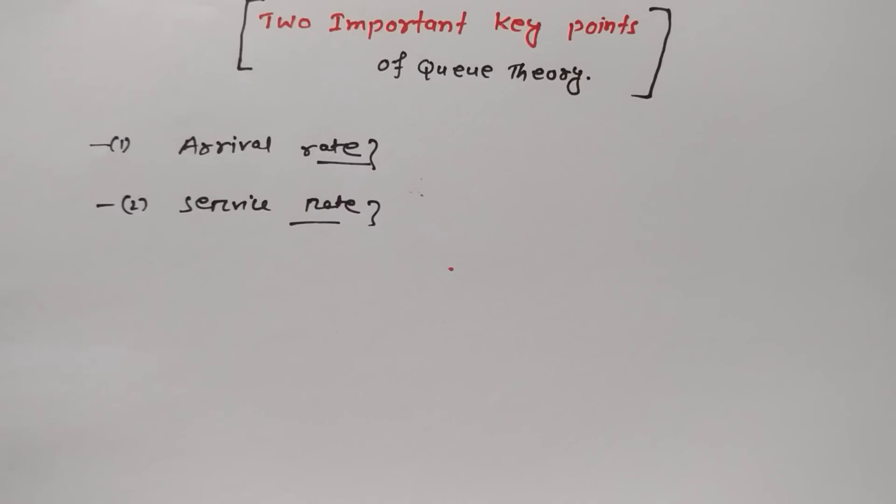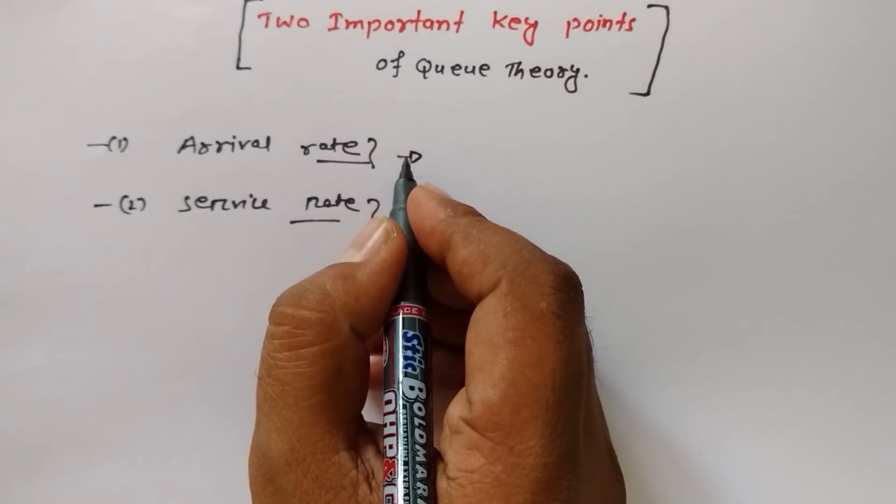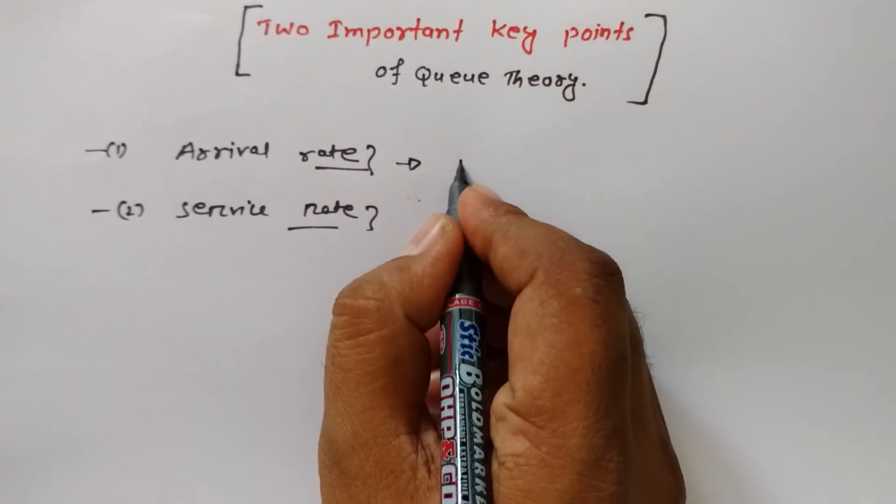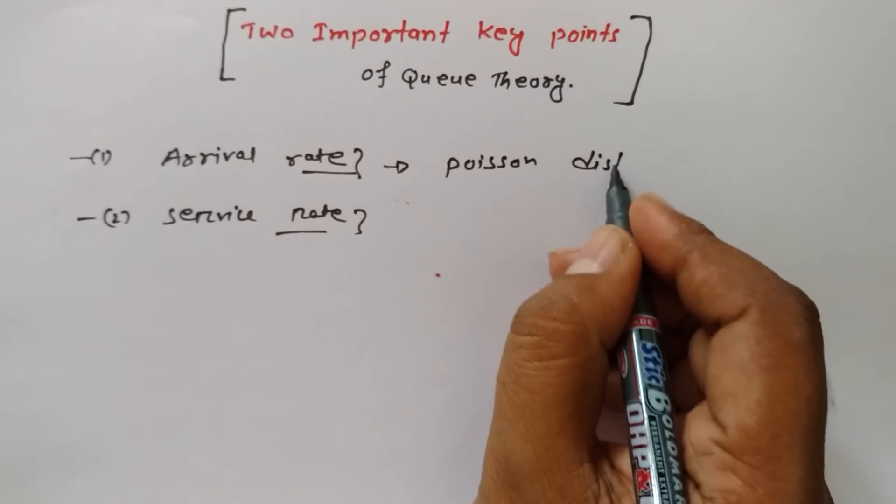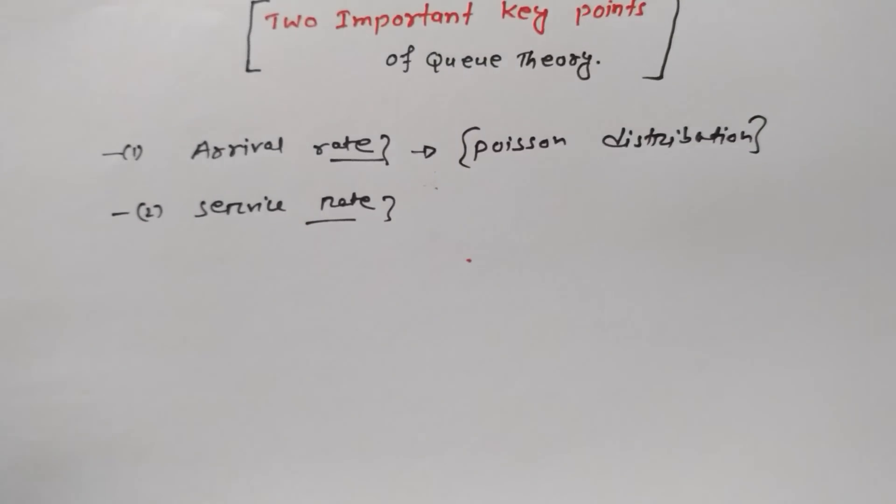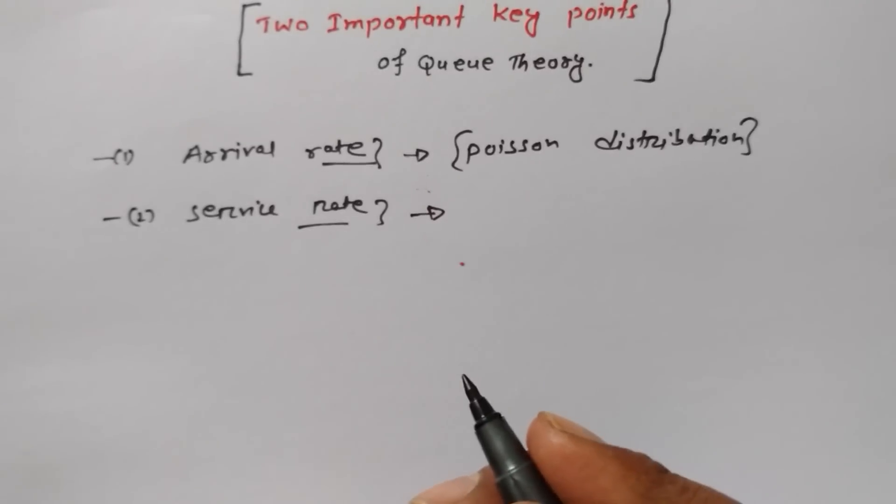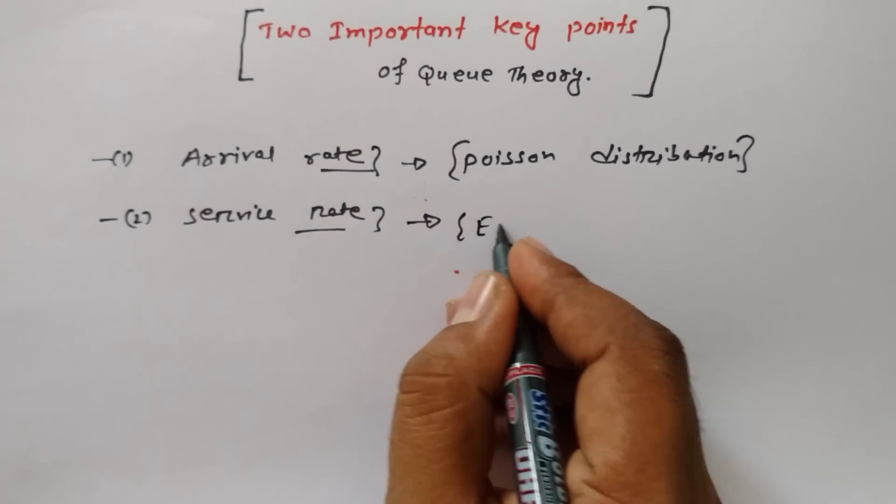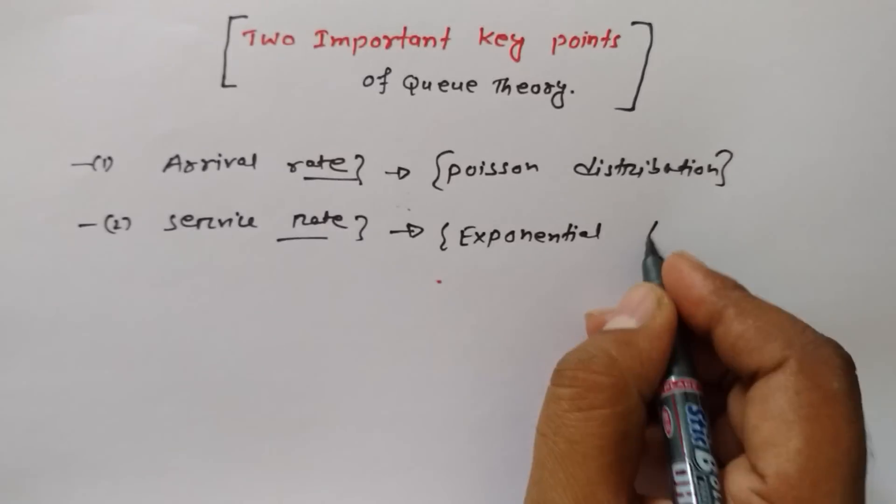Basically, if we see arrival rate, we follow the Poisson distribution. In case of arrival rate, we follow Poisson distribution. But in case of service rate, we follow exponential distribution.